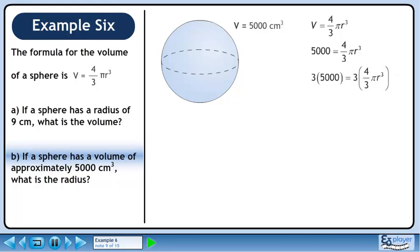Multiply both sides of the equation by 3 to eliminate the fraction. This gives us 15000 equals 4 pi r cubed.